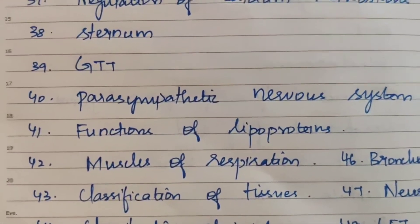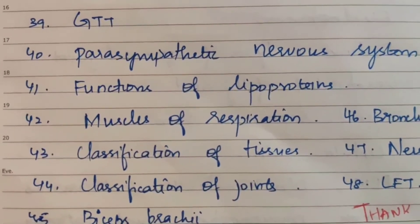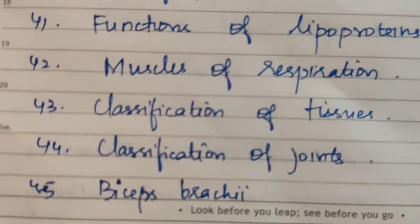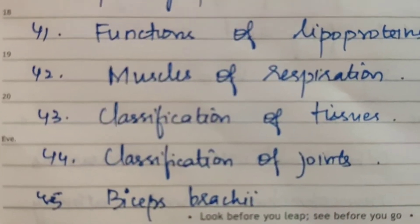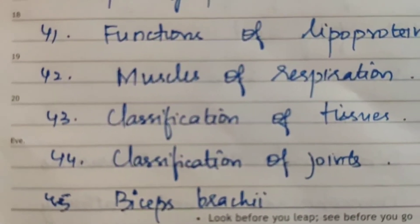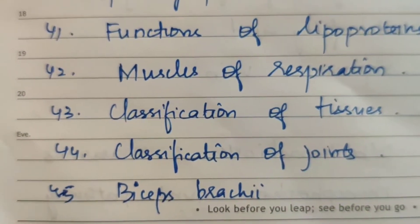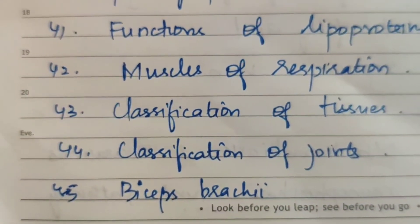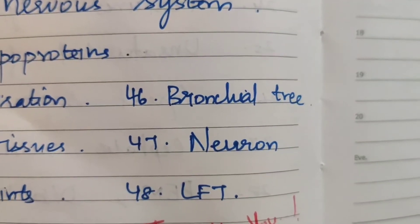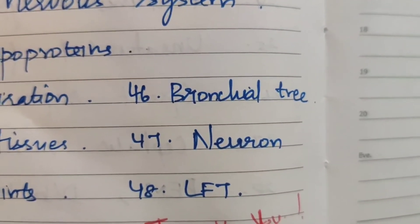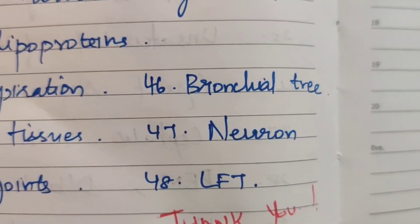Remaining 5-mark topics: parasympathetic nervous system; functions of lipoprotein; muscles of respiration; classification of tissues; classification of joints; biceps brachii; bronchial tree; neuron; and liver function test.